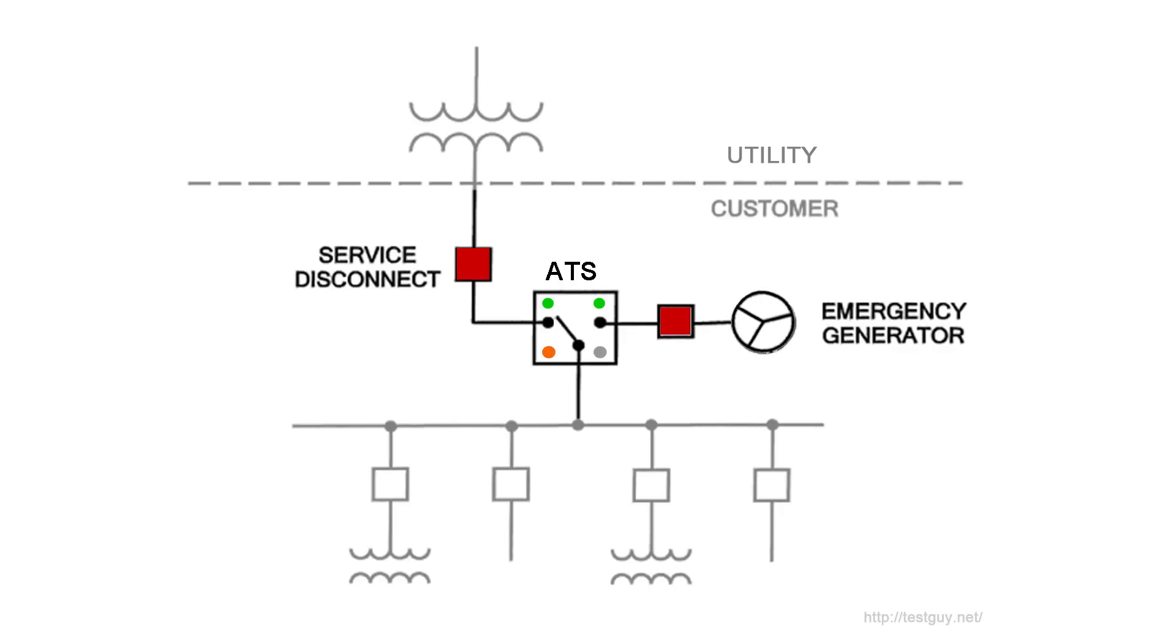Step 6. The delay engine stop timer will begin its timing cycle. The generator runs unloaded for the duration of this timing cycle. When the timer completes its timing cycle, the generator will stop. The source 2 available lamp goes off. A minimum time delay of 5 minutes should be provided for unloaded running of the emergency power system prior to shutdown. This allows the engine to cool down. The minimum 5 minute delay is not required on small air-cooled prime movers 15 kW or less.